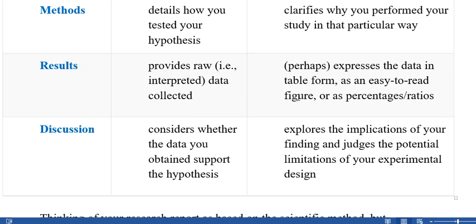Results: provides raw, uninterpreted data collected. Results perhaps express the data in table form, as an easy-to-read figure, or as percentage ratios. Results are what you get when some person has made a hypothesis, applied a specific research methodology and research tool, done all the action—collected data and information—and later when he has got that information.